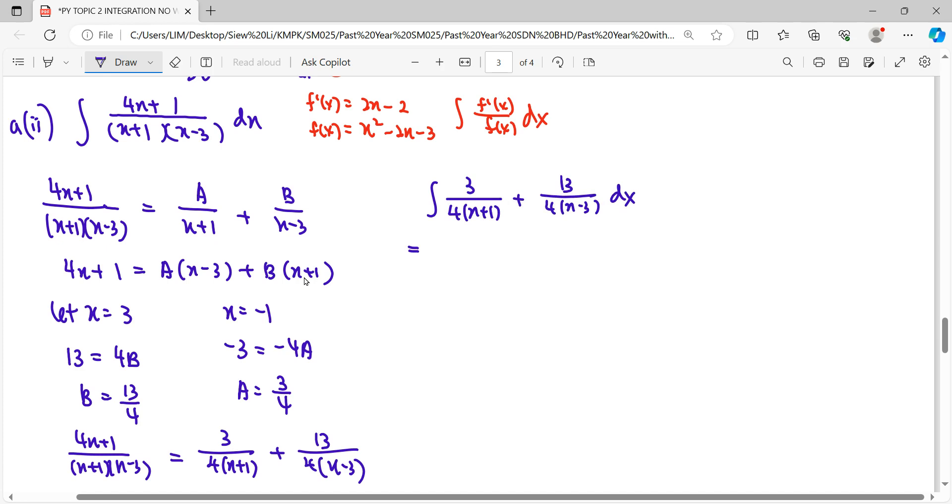Then to integrate this, obviously we can see here we can factorize out 1 over 4, or I can factorize up 1 by 1: 3 over 4 integrate 1 over x plus 1 dx, plus 13 over 4 integrate 1 over x minus 3 dx.